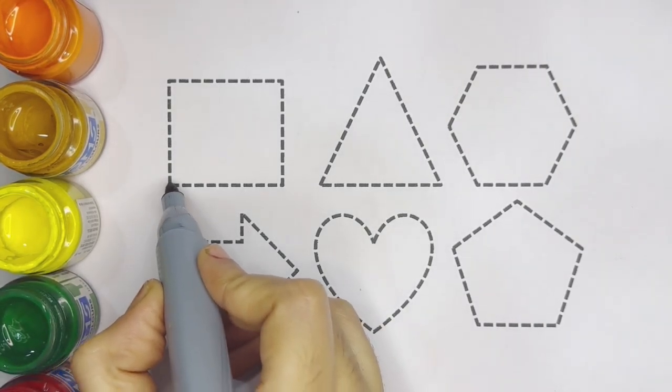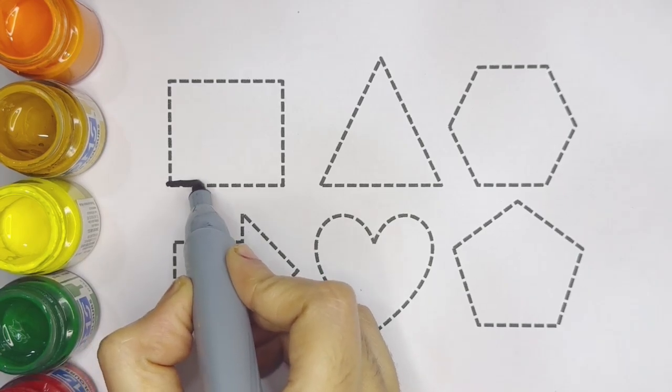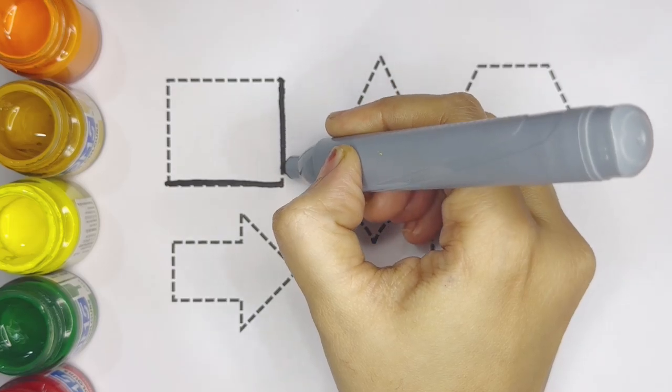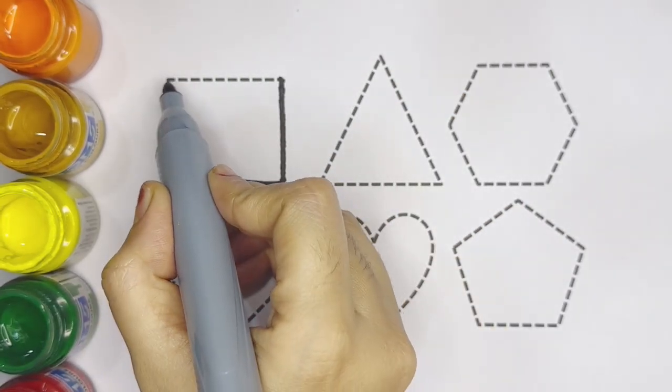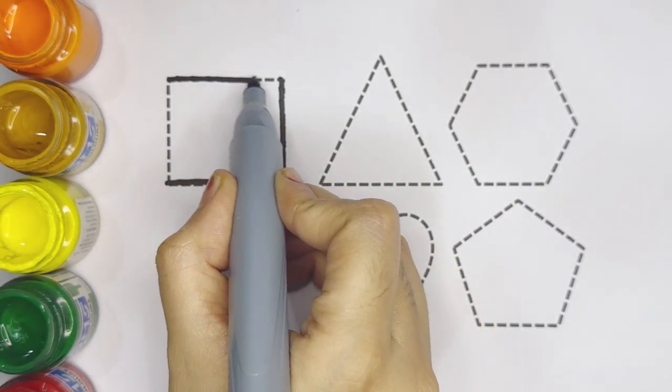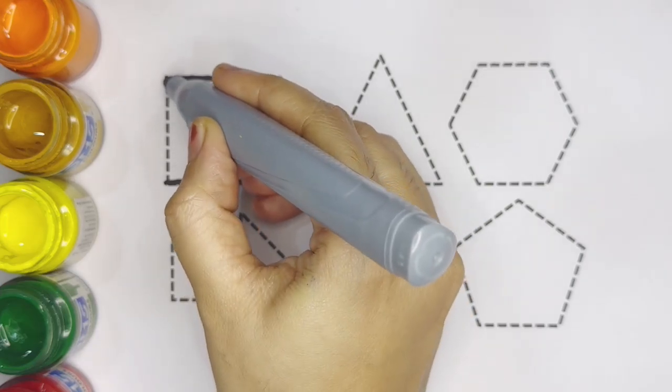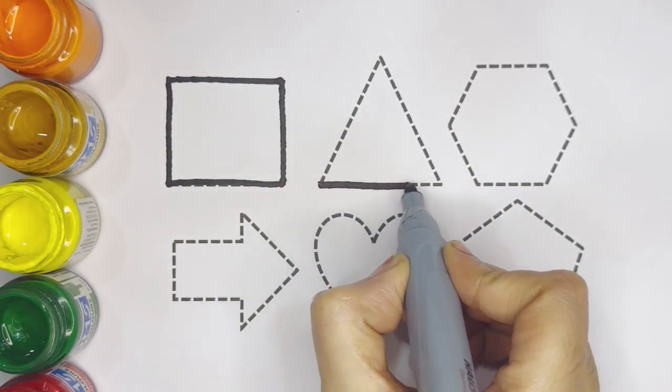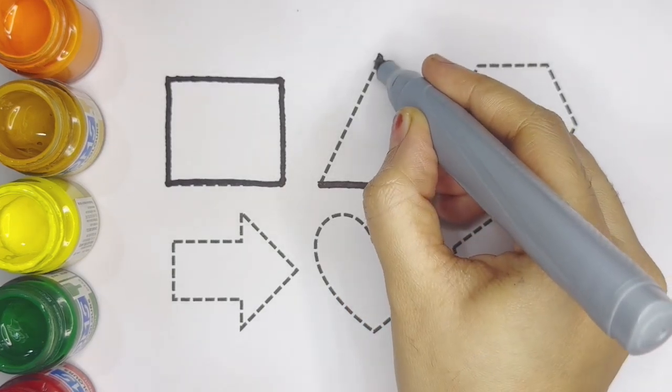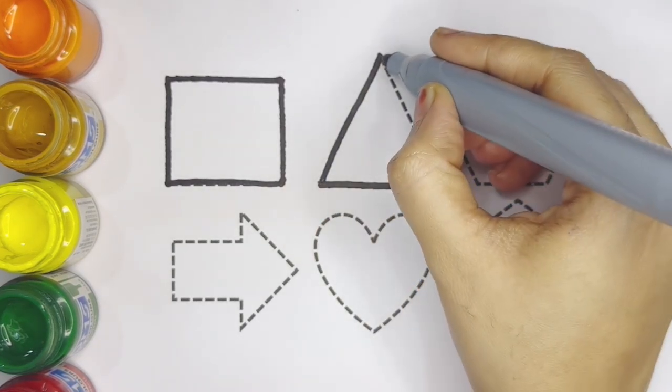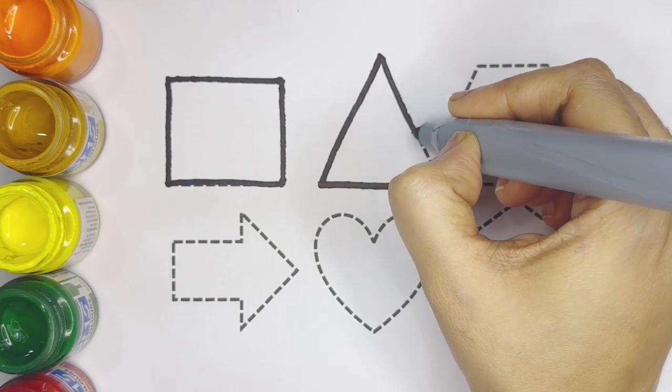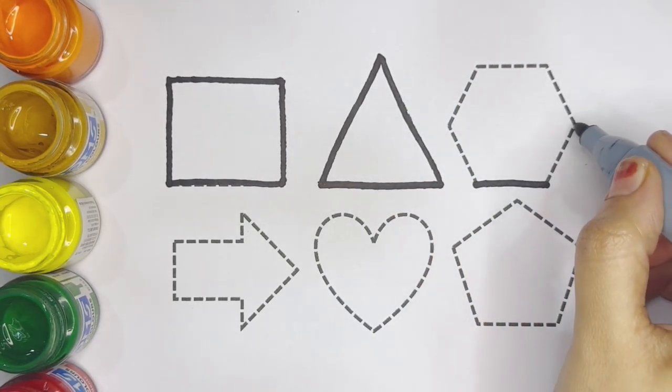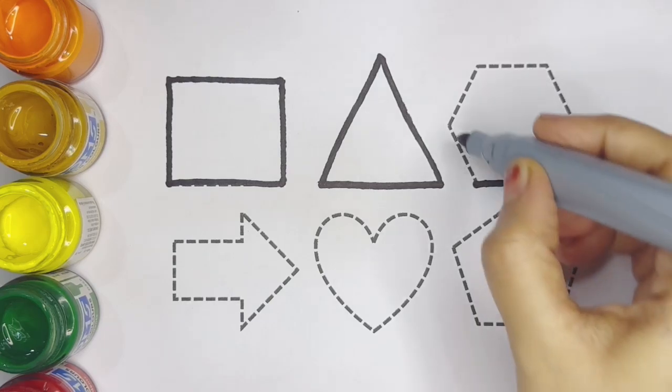Now let's draw the shapes. Square, this is square. Triangle, this is triangle. Hexagon, this is hexagon.